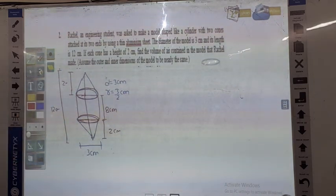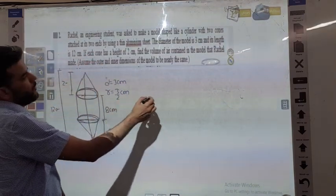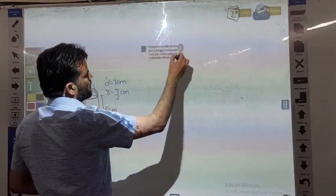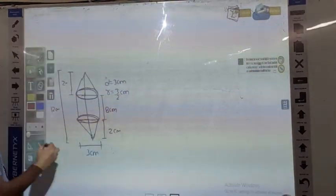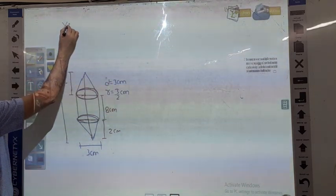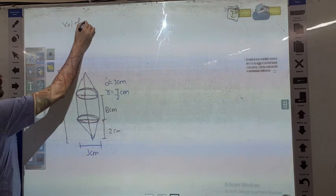If each one has a height, find the volume of air content in the model. What do you need? The volume of the solid. Volume of the model.